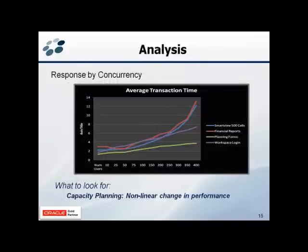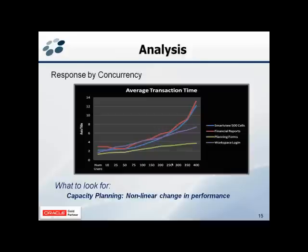Now analysis. When you get your results, it's important to be able to analyze them, which is why if you're defining tests that don't represent what your users are actually doing, your results won't be representative and your analysis will be based on faulty information. One thing to look at is response by concurrency. We established a mix of tests to run at different concurrencies, and here we can see four different tests and how the response time changed by concurrency.